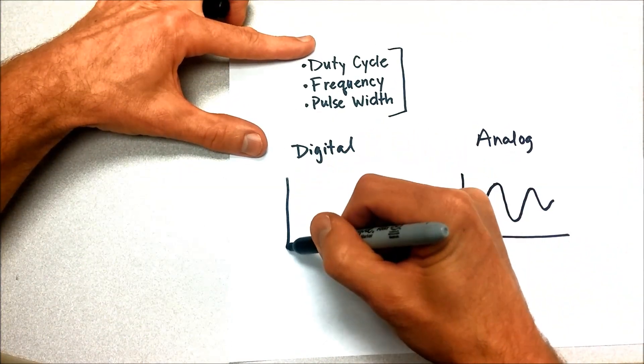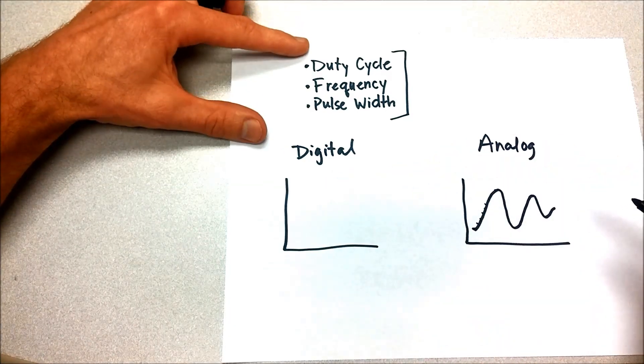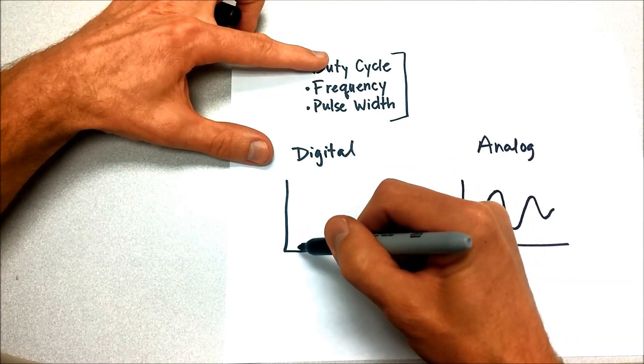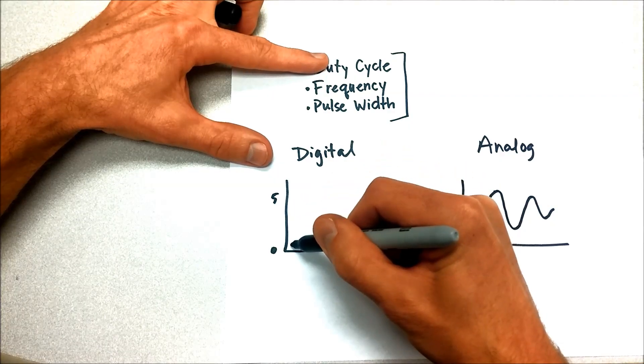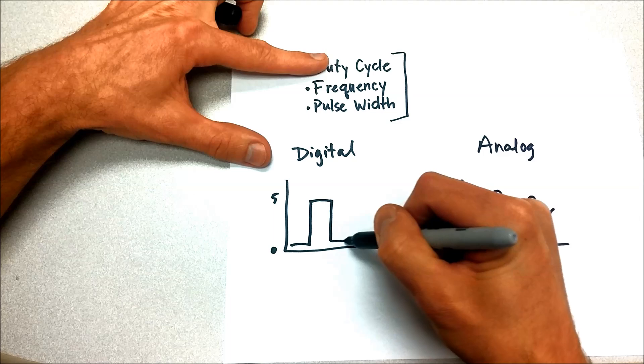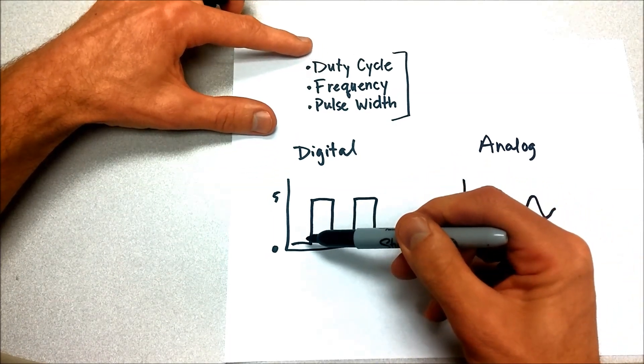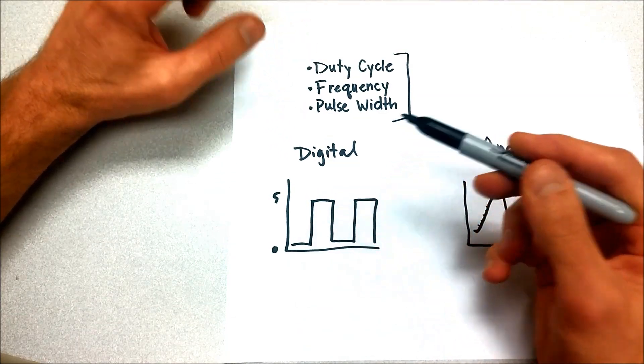A digital signal, on the other hand, is given a set number or a finite number of increments, typically on or off, or high or low. So if we have a zero to five volt scale here, low may be near zero volts, and high would be near five. And it looks like a square wave because it doesn't vary. There is no one and a half, it's either zero or five, and nothing in between.